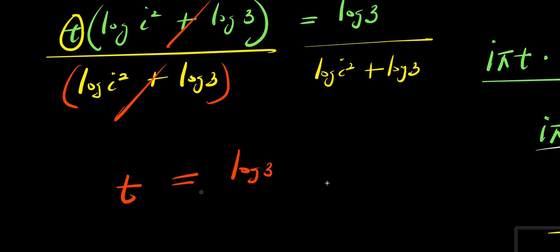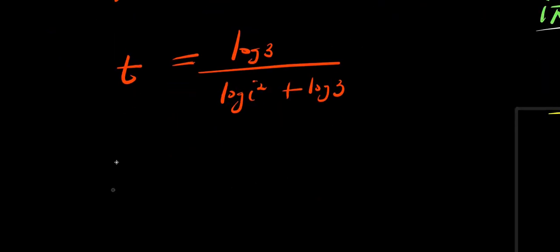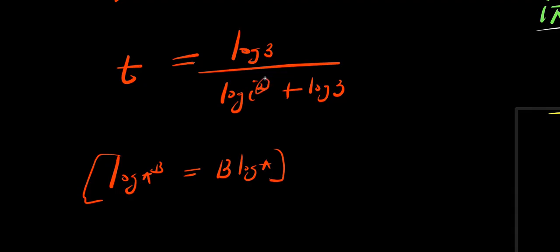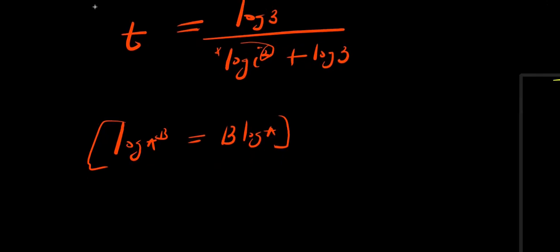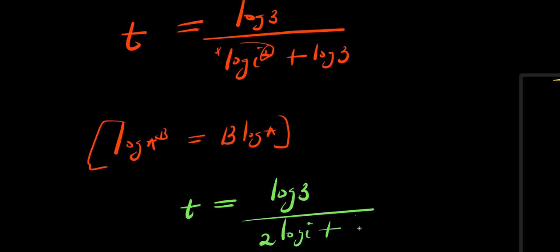Applying the log power property log(a^b) = b·log(a), the exponent 2 comes in front of log i. So we have t equals log 3 divided by (2·log i + log 3). This is our solution using the second method.